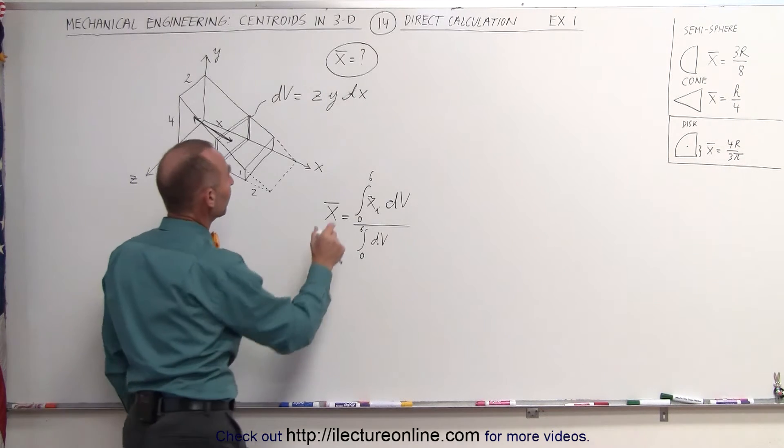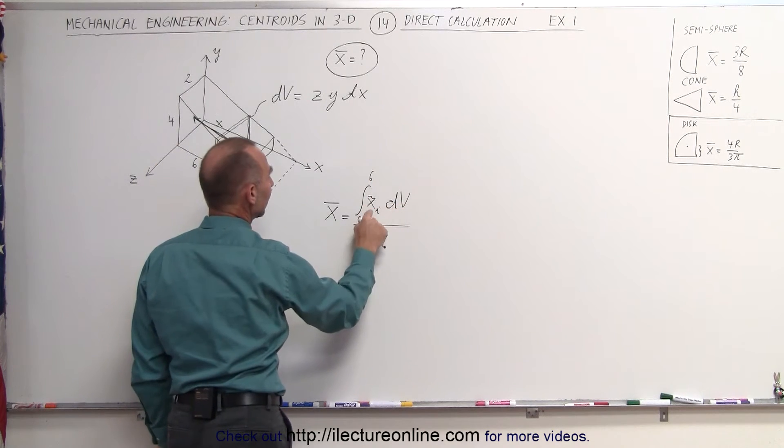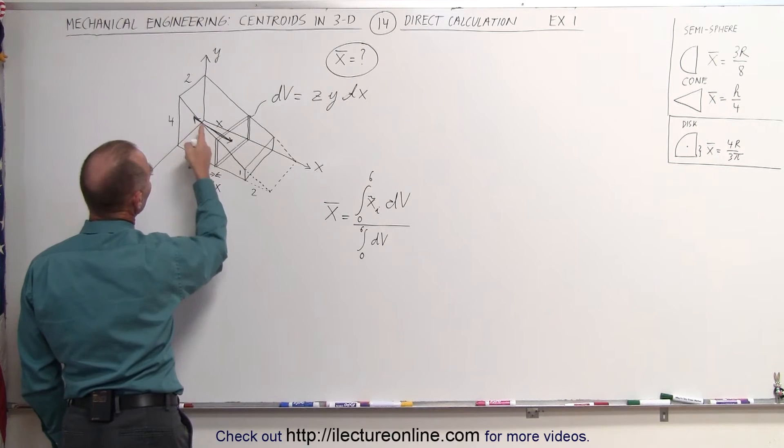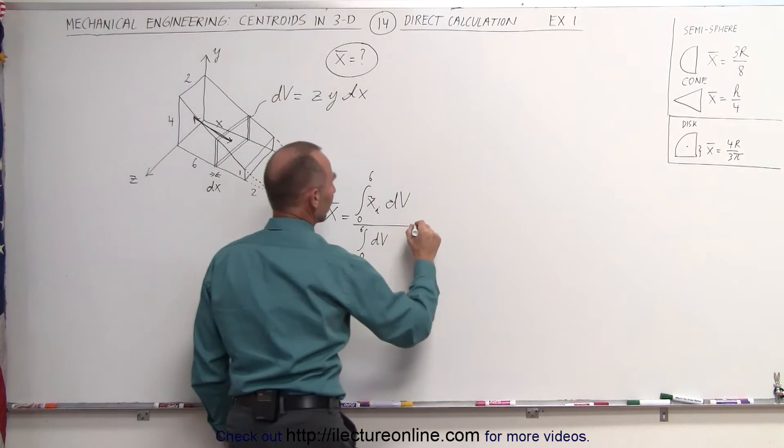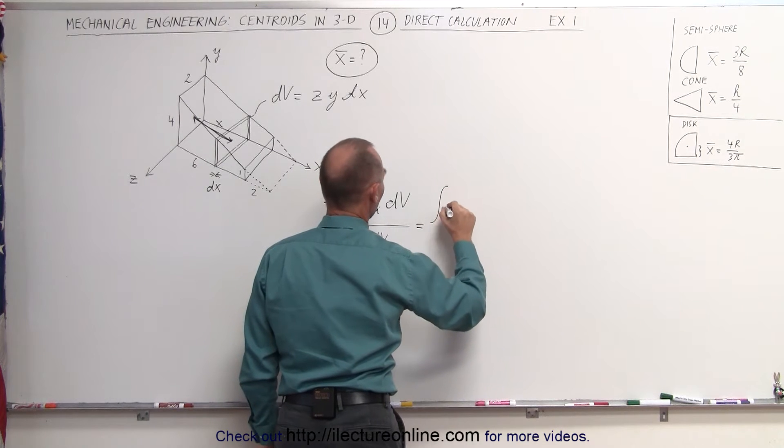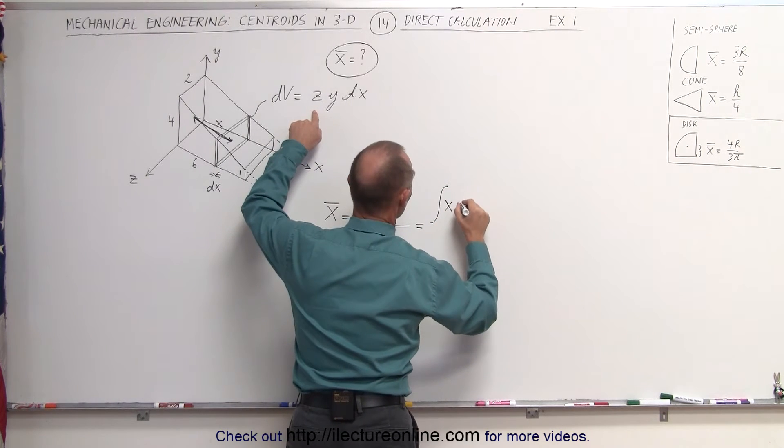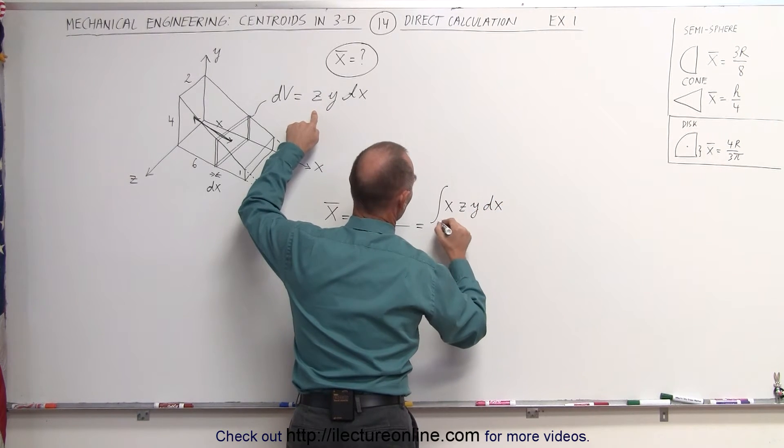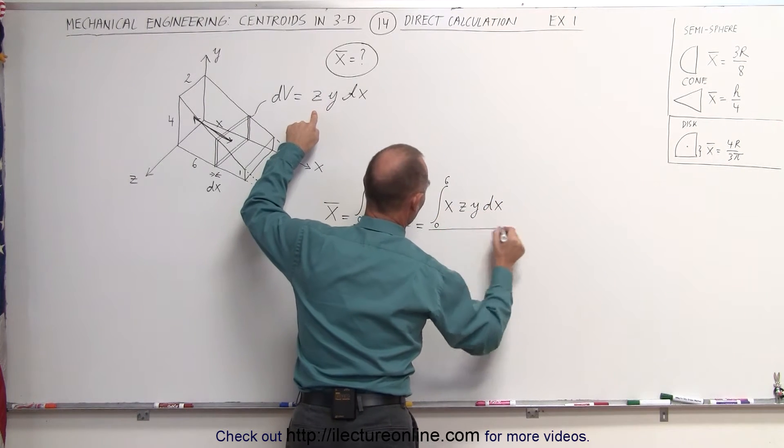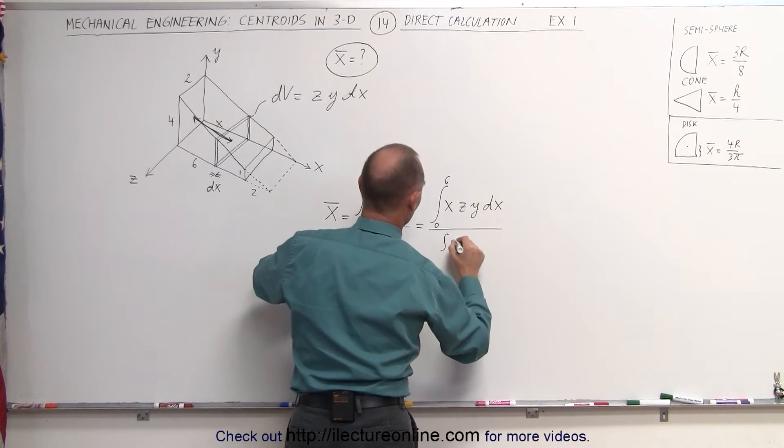Now what we need to do is we have to multiply the dv in here times the x-coordinate centroid, which in this case is equal to x distance away from the yz plane. So this can be written as the integral of x times dv, which is z times y times dx from 0 to 6, all divided by the integral of dv, which is z times y times dx.